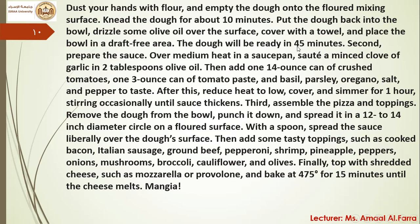That was all about the first step. Now the second step: prepare the sauce. Over medium heat in a saucepan, sauté a minced clove of garlic in two tablespoons of olive oil. Then add one 14-ounce can of crushed tomatoes, one 3-ounce can of tomato paste, and basil, parsley, oregano, salt, and pepper to taste. After this, reduce heat to low, cover, and simmer for one hour, stirring occasionally until sauce thickens.